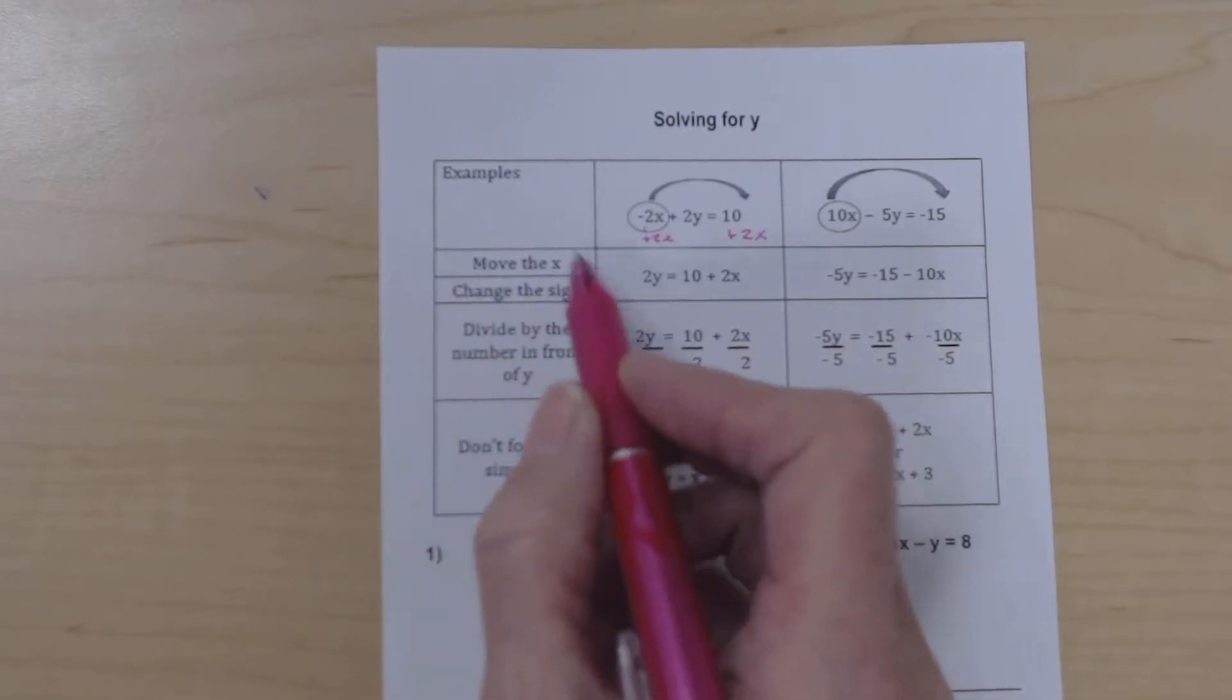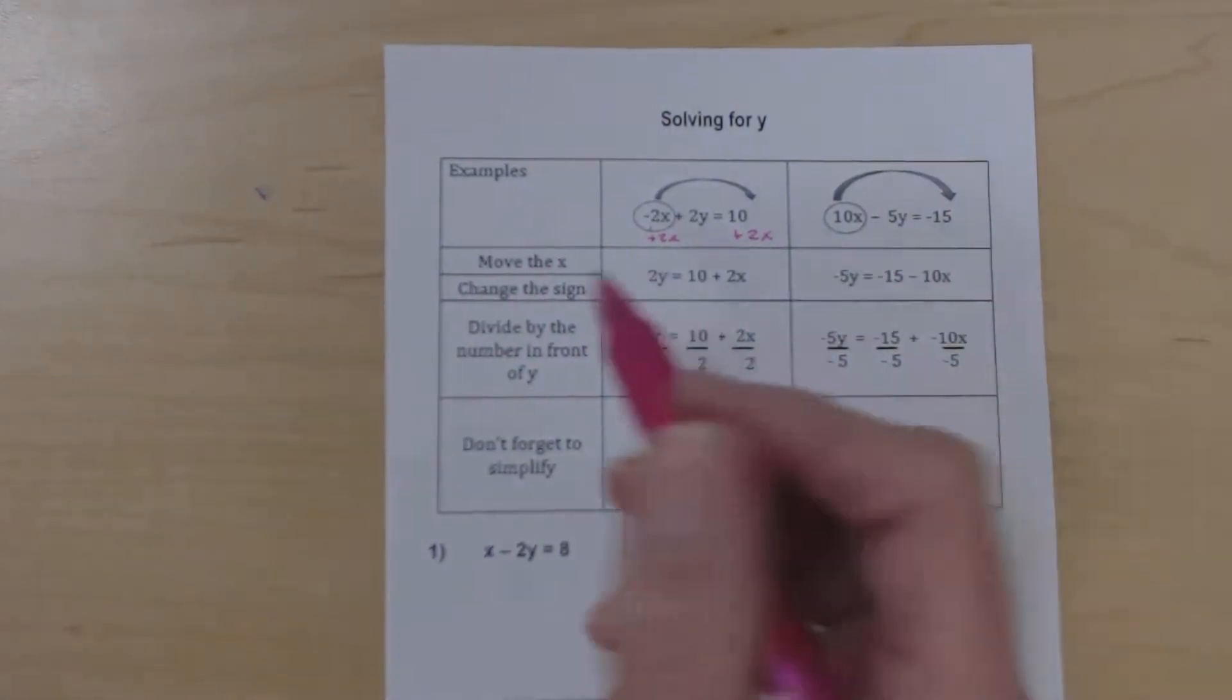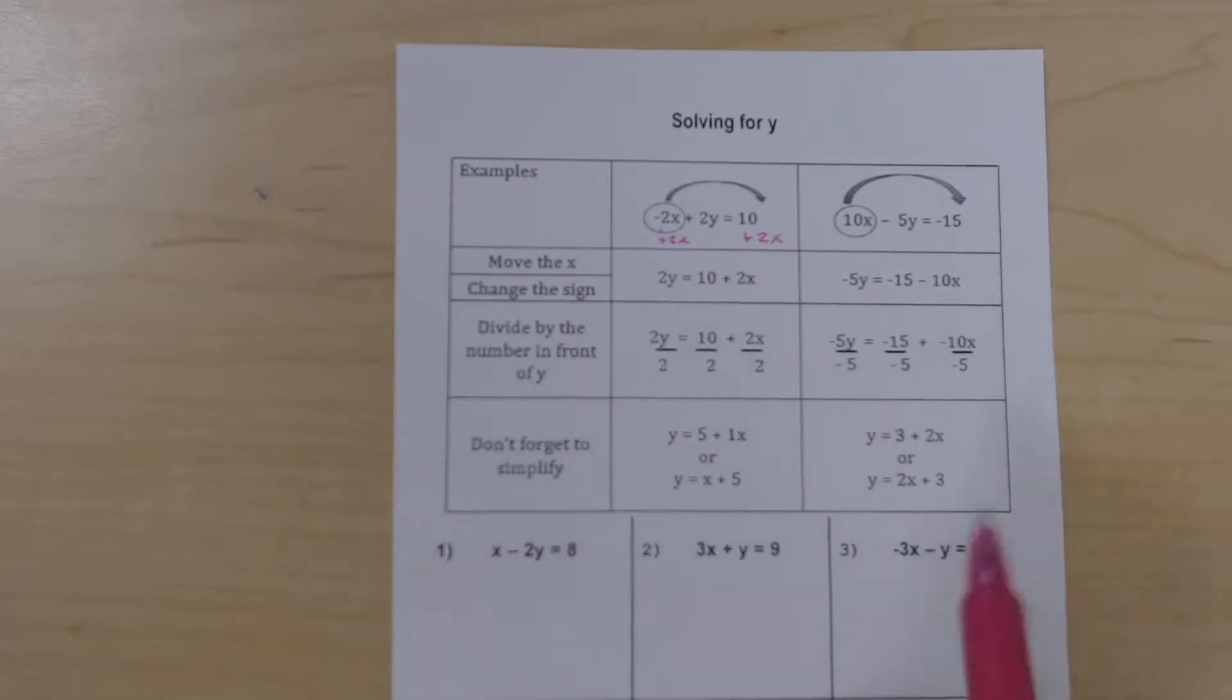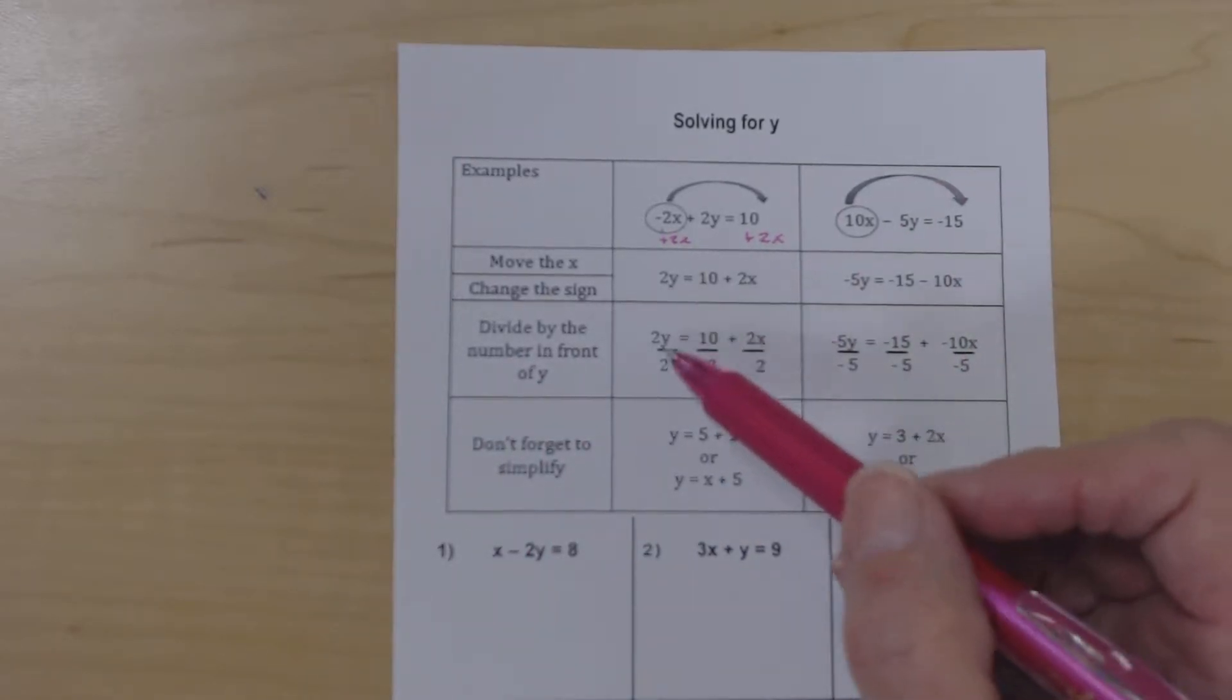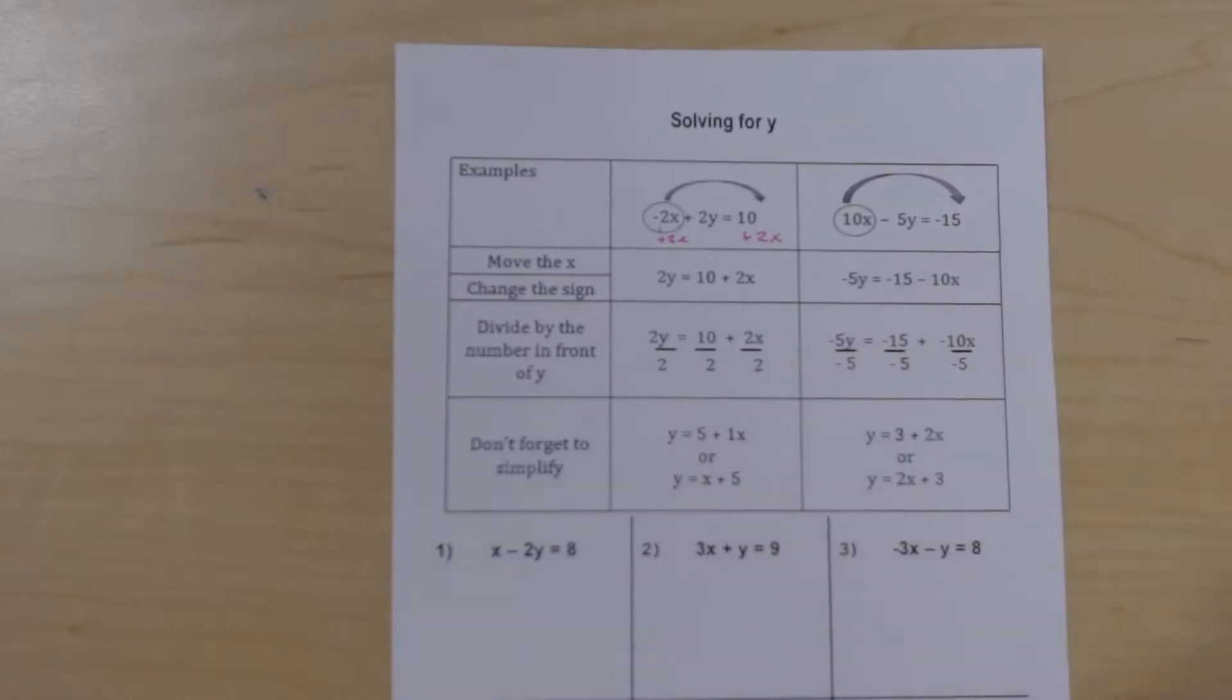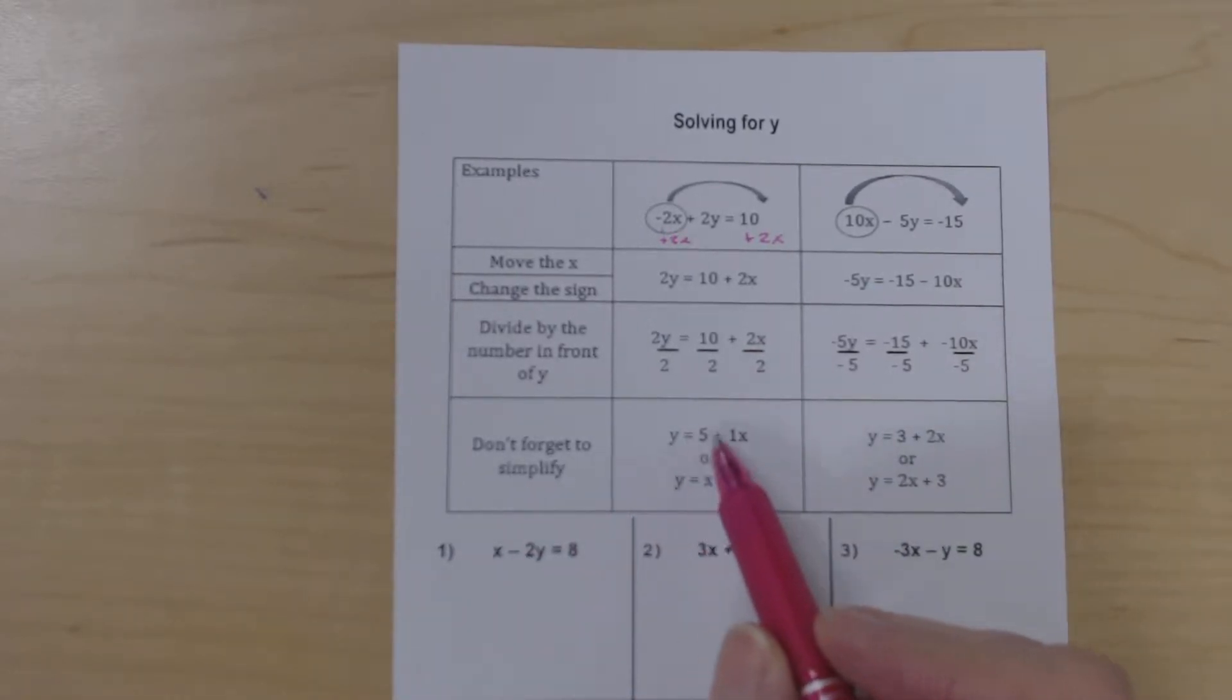So here we do the move the x, change the sign. Then we move down to the next thing we need to do, which is divide by the number in front of y. Well, the number in front of y is a 2, so we're going to divide every single term by 2. After that, we need to simplify. So y equals 5 plus 1x or y equals x plus 5. These are the same thing. We've just written this one in more of a conventional form.